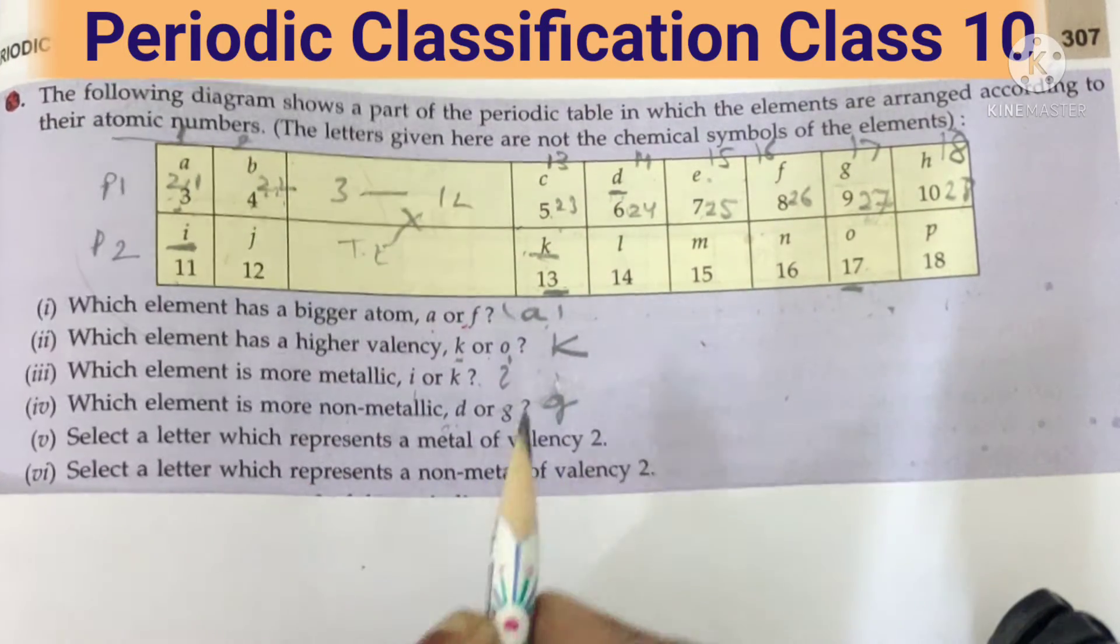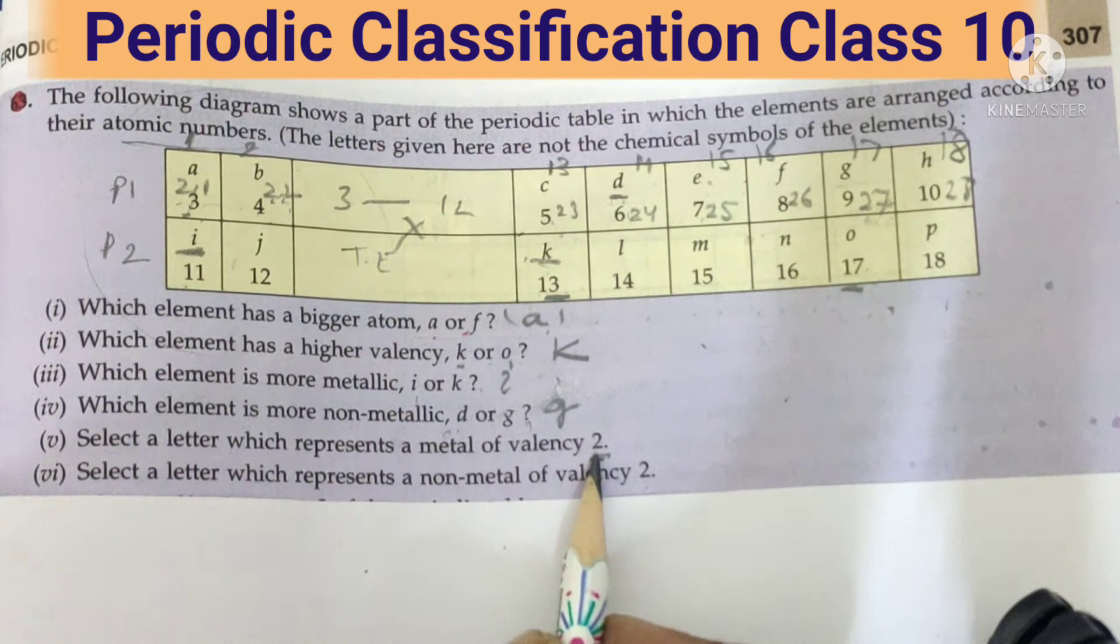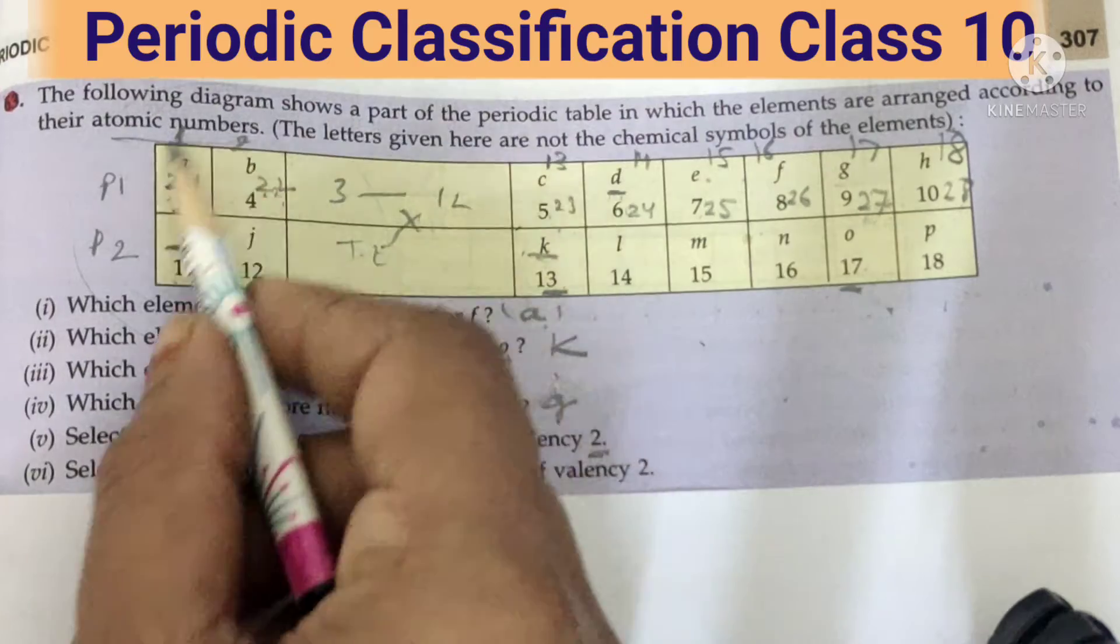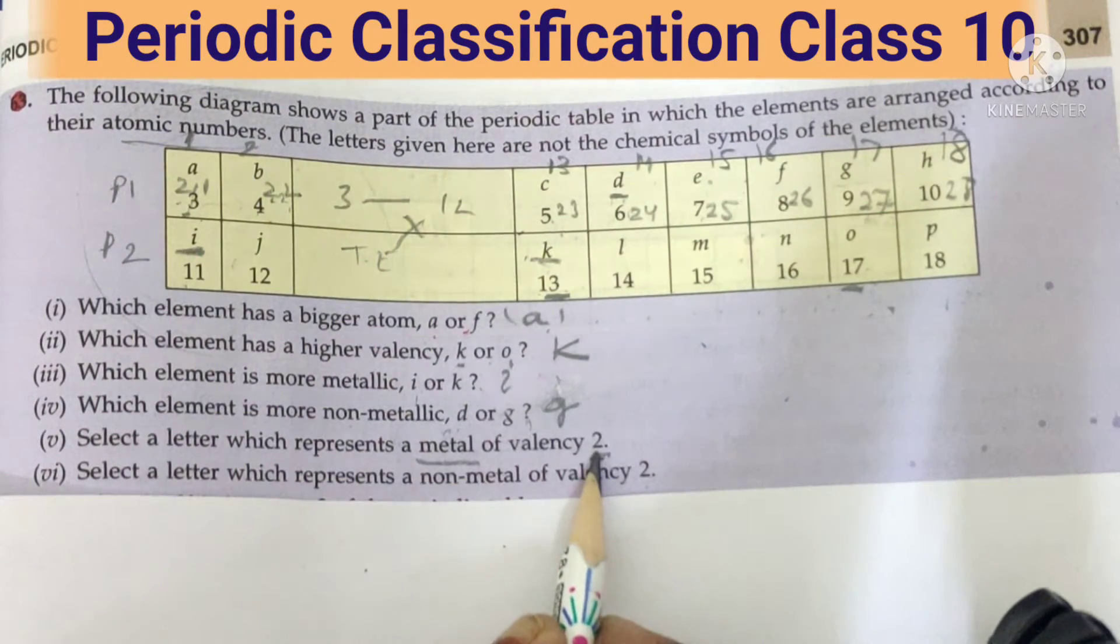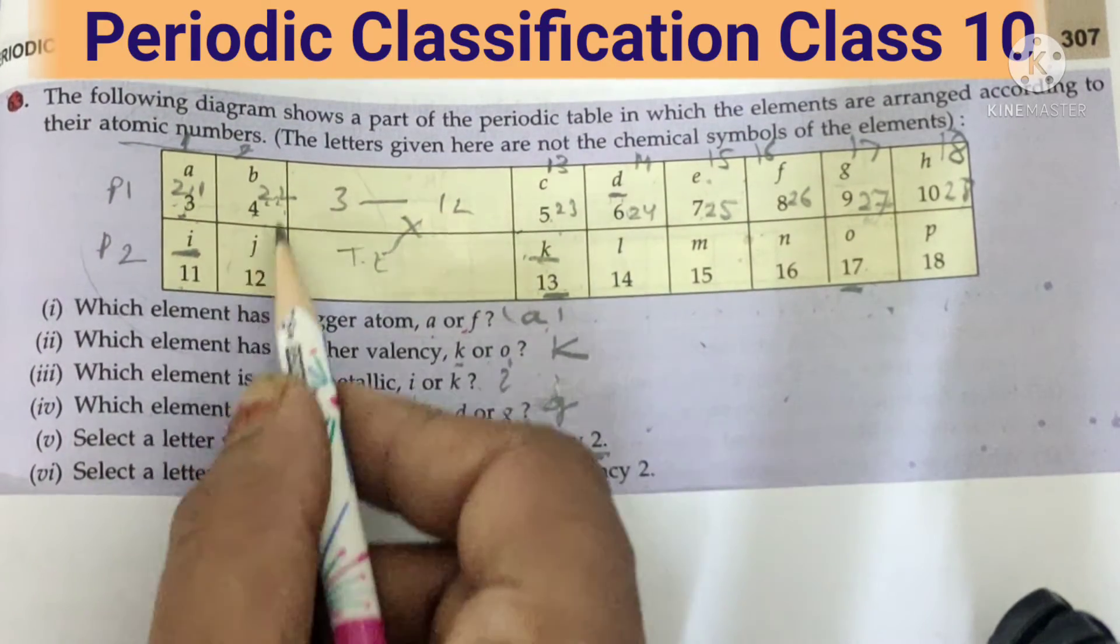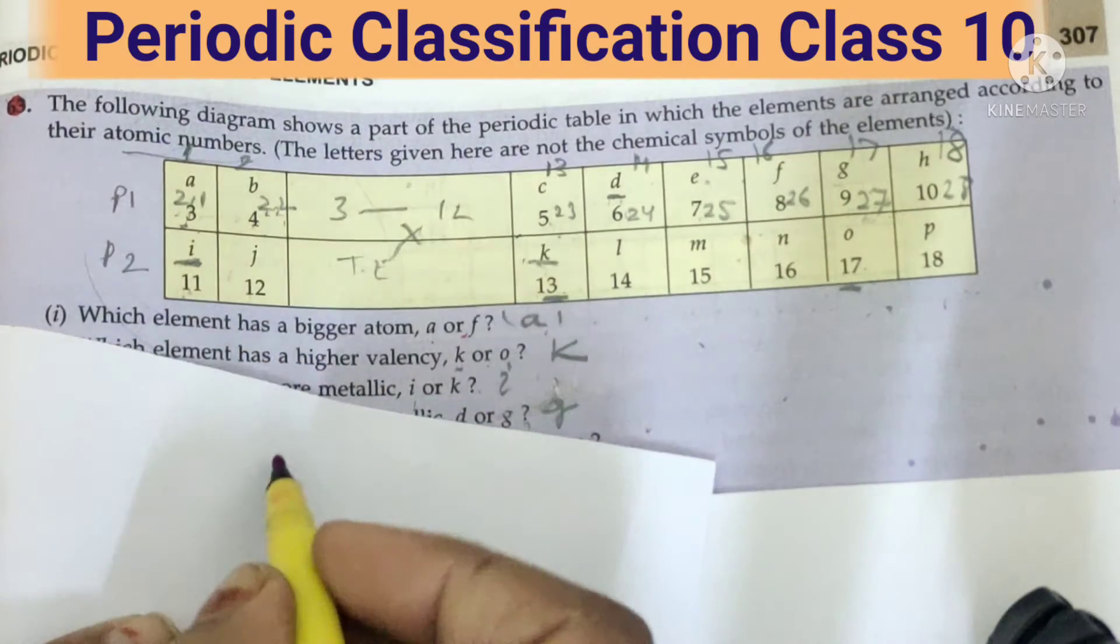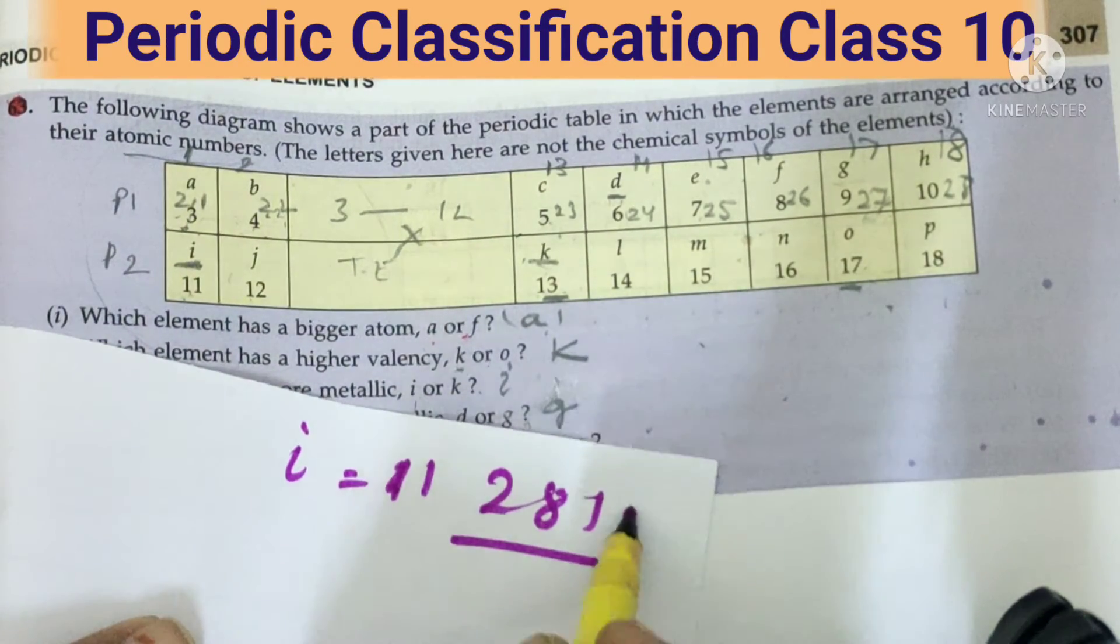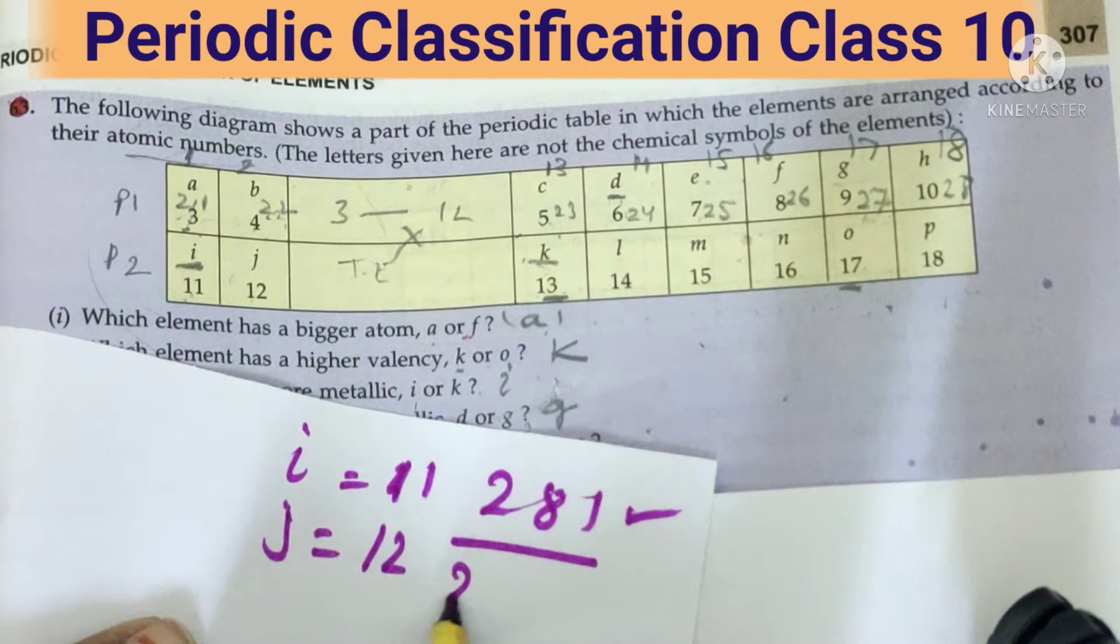Select the letter which represents a metal of valency two. What is valency two? That means you have to select a metal. That means it is not happening here, it is not happening here. Now in this side, which is valency two? Valency two means it can donate two. Who will donate two? Let's see this one. I has eleven, so two eight one configuration, so it will donate one.